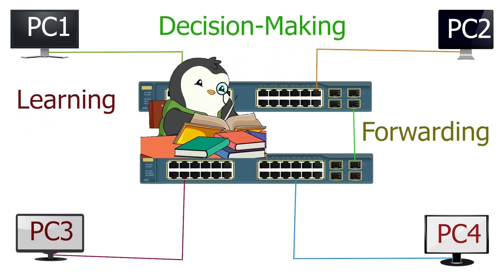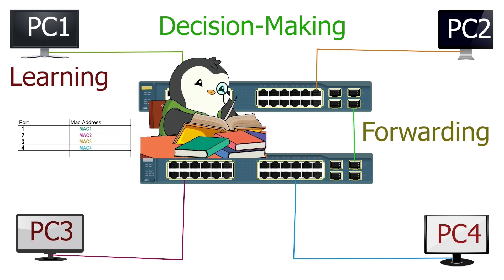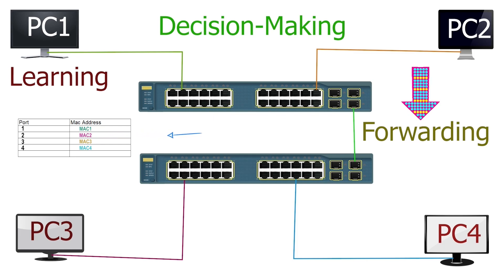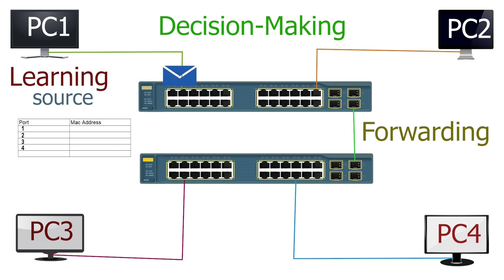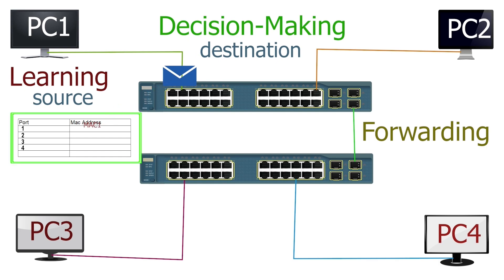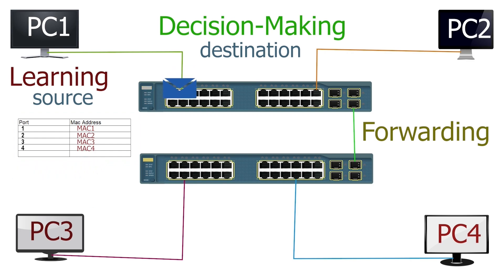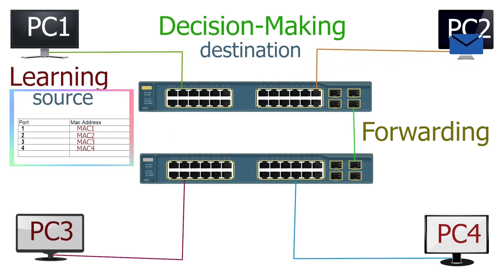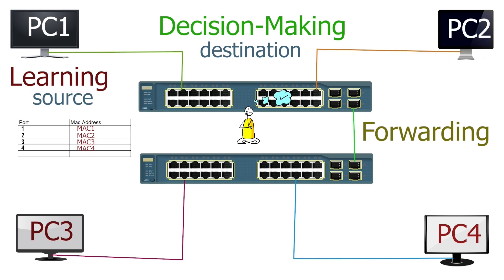In the learning stage, the switch learns the MAC addresses of connected devices and adds them to the CAM table. In the decision-making stage, it selects forwarding ports for incoming frames. In the forwarding stage, it forwards frames from the ports selected in stage 2. It uses the source MAC address of incoming frames to learn device addresses, and the destination MAC address to make forwarding decisions. A CAM table entry contains a MAC address and an associated switch port. When the switch receives a frame, it finds the destination MAC address in the CAM table and forwards the frame from the matching port.